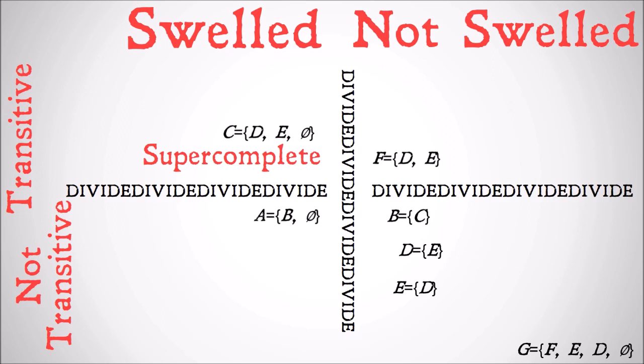Finally, G contains F, E, D, and the null set. Starting with swelled: the subsets of F include the null set, E, D, and the set of E and D (also known as F) — G contains all of those. Subsets of E include the null set and E itself. Subsets of D include the null set and D itself. So G is swelled. For transitive: G contains all members of F (D and E), all members of E (D), all members of D (E), and the null set has no members. So G is super complete.